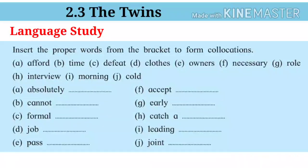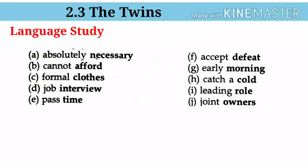Now insert the proper words from the brackets to form collocations. The words are: absolutely necessary, cannot afford, formal clothes, job interview, pass time, accept defeat, early morning, catch a cold, leading role, joint owners.